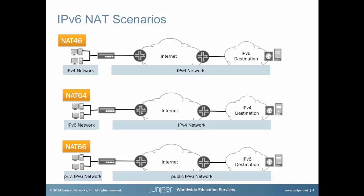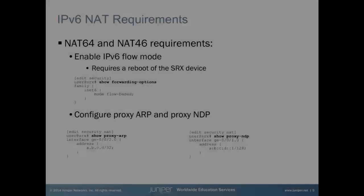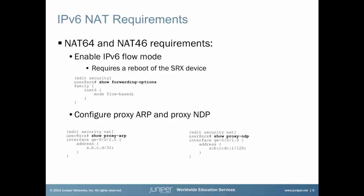In this video, however, we only cover NAT64 and NAT46. Before we begin with any configuration, there are requirements on the Juniper SRX devices that need to be configured in order to make all subsequent configuration work. First, we need to enable IPv6 flow mode, since IPv6 runs in packet mode out of the box. And second, we need to enable proxy ARP or proxy NDP in those cases when a translated IPv4 or IPv6 address falls into the network range of the configured interface IP.